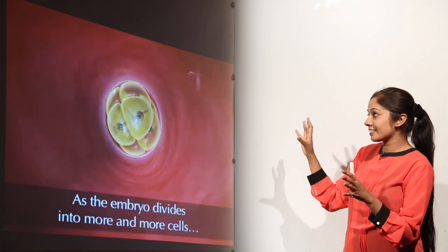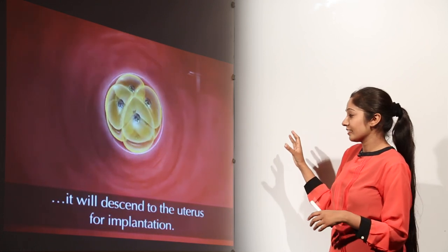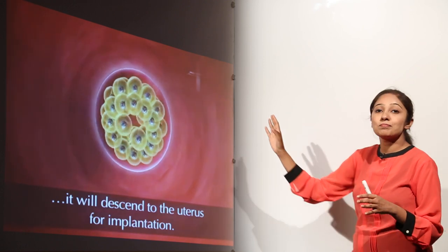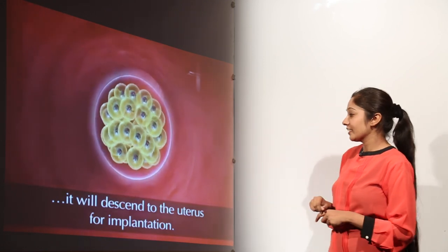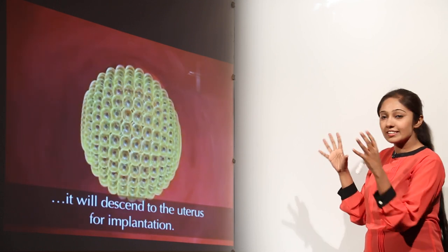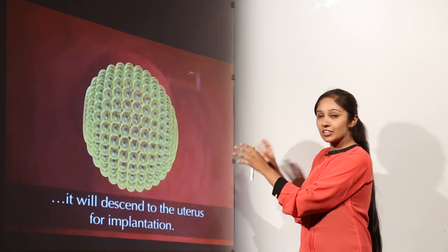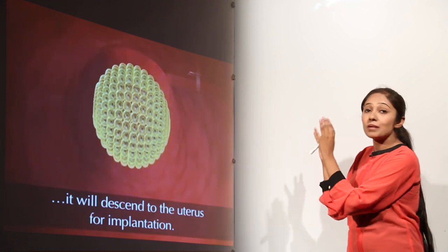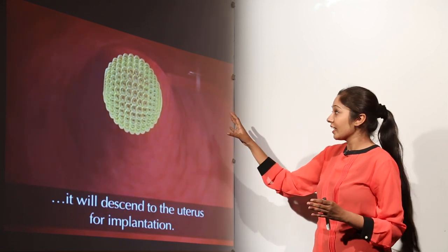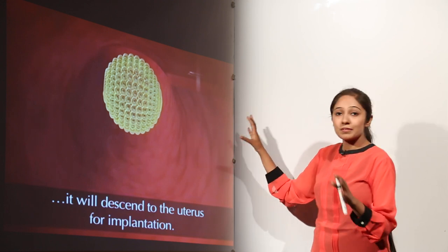The embryo reaches certain stages and descends to the uterus for implantation. It is still dividing, and after this division, it implants itself into the uterine wall. This is how embryonic development proceeds.